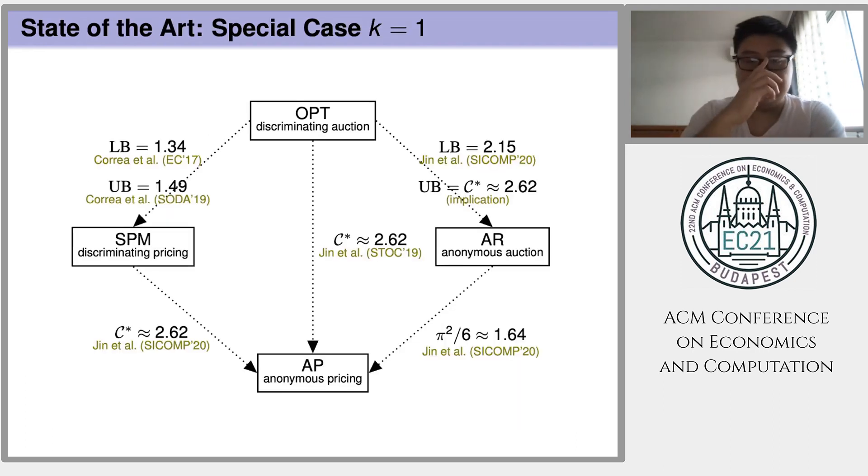Let me summarize the previous work. First, consider the special case of the single-item case. In this setting, among all of the five gaps, three of them have been closed: the one between SPM and AP, the one between OPT and AP, and the one between AR and AP.